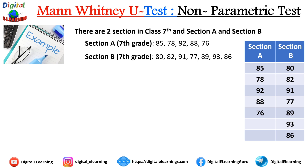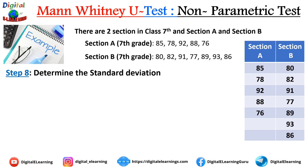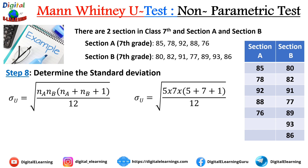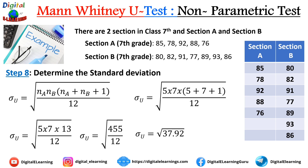Step 8: determine the standard deviation. The formula is σ = √(N_A × N_B × (N_A + N_B + 1) / 12). Plugging in the values, we get 37.92 under the square root, which gives a standard deviation of 6.16.